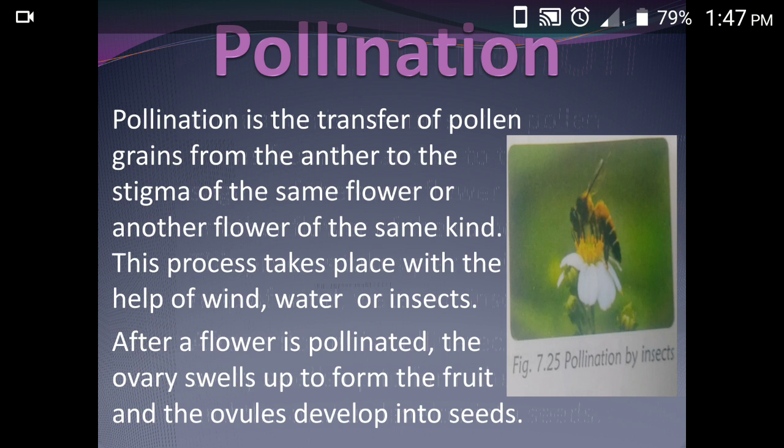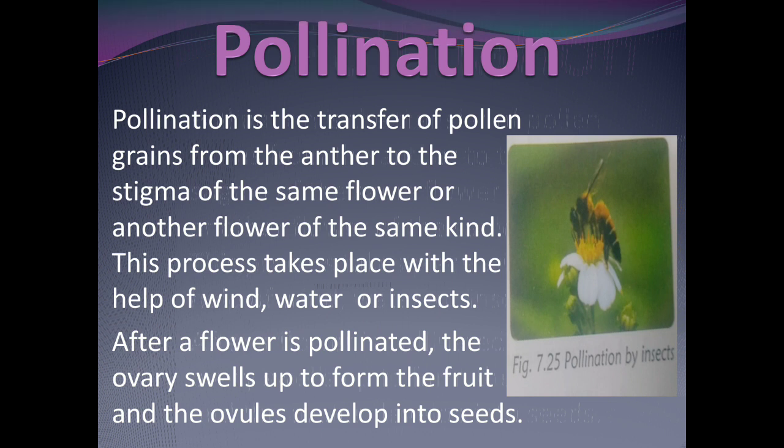Pollination means the transfer of pollen grains from the anther onto the stigma. This can occur on the same flower or on any other flower of the same plant. This process takes place with the help of wind, water, and insects — these three agents transfer the pollen grains.